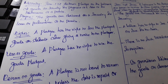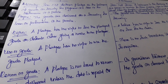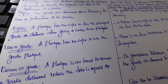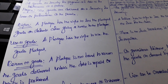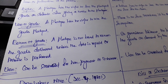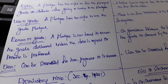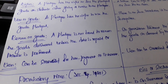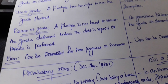A Pledgee has the right to sell the pledged goods on default after giving a proper notice to the Pledgor. Pledgee has no right to use the pledged goods. The Pledgor has to repay the debt or perform the promise, or else the Pledgee won't return the goods. A lien can be exercised for the non-payment of interest.